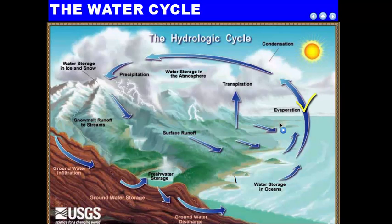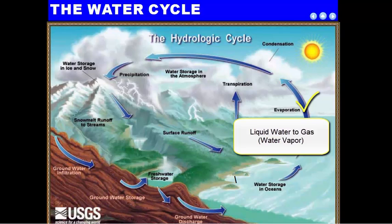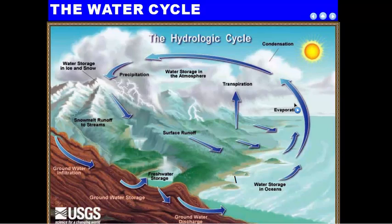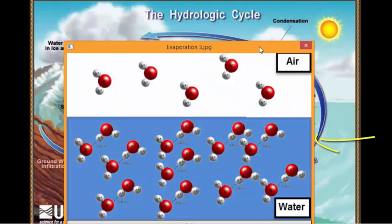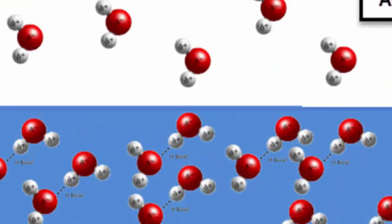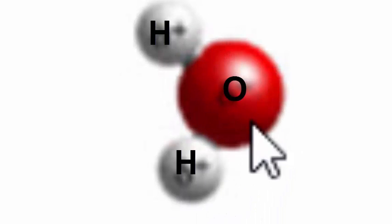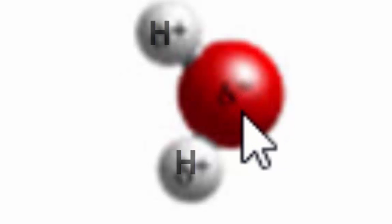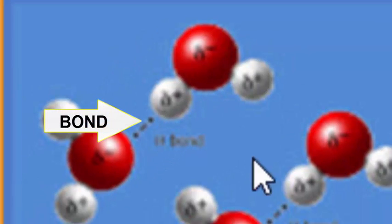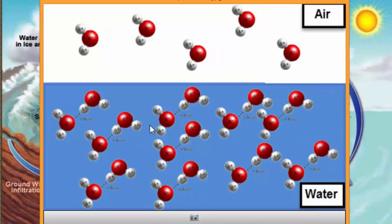Let's talk about evaporation first. Evaporation is when liquid water, like water in the ocean, turns into a gas or water vapor. Here we have a basic drawing of water in liquid form and water vapor. H2O is what water is — we have H2, two white hydrogen atoms, and then the oxygen in the middle. In liquid form, water molecules are loosely bonded together, which is why water isn't as light as vapor or as solid as ice.